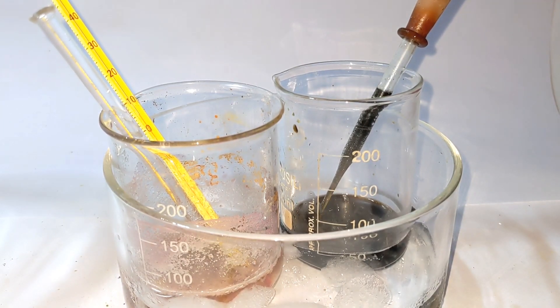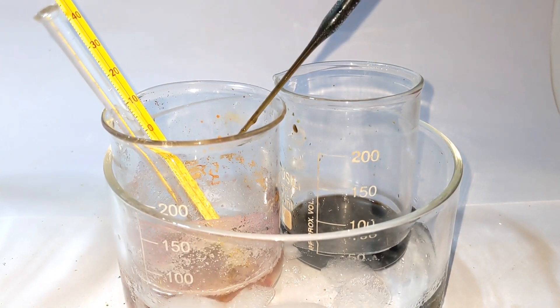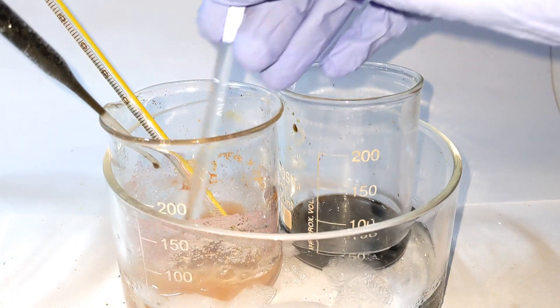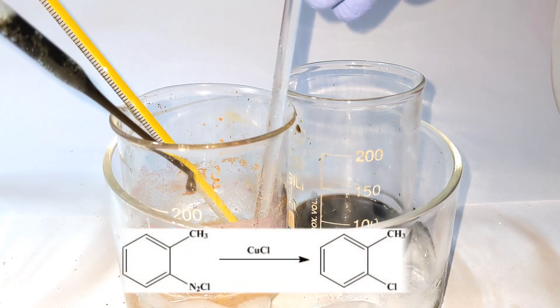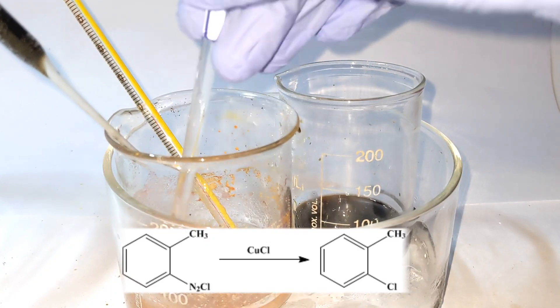Now the chilled cuprous chloride in hydrochloric acid solution was added to the diazonium solution. Once the whole cuprous chloride solution is added, a lot of solid substance is formed and the mixture becomes viscous. This is due to the formation of addition products.